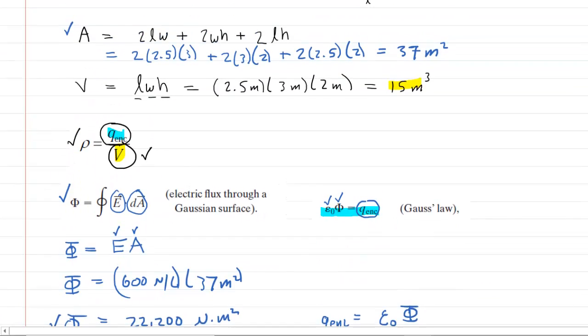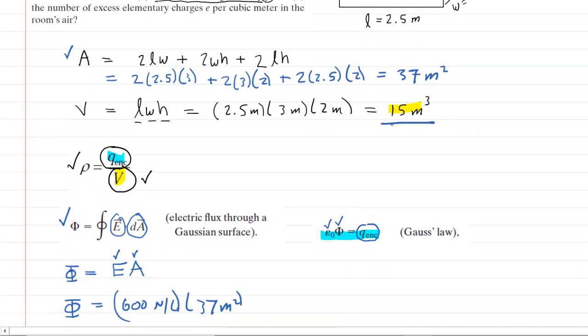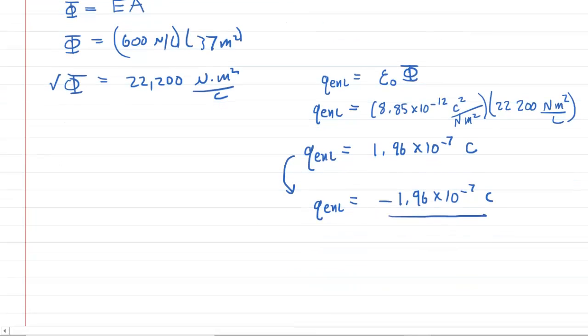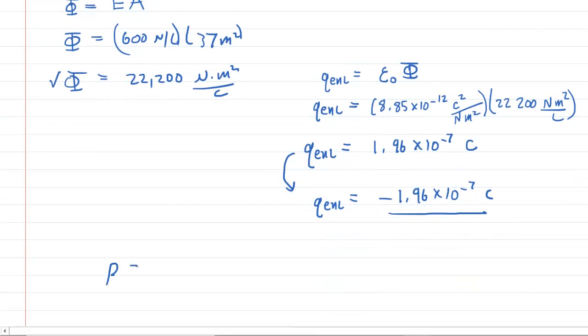We scroll back up and recall that we had the volume of 15 meters cubed. So now we're ready to go ahead and calculate the volume charge density, which is the charge divided by the volume. So here we go. We're going to take the enclosed charge and then divide that by the volume. And this is going to give us our answer to part A of the question.